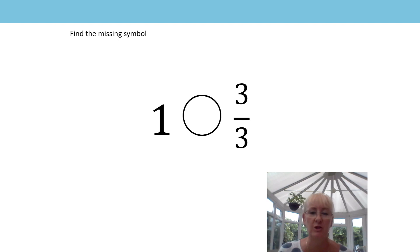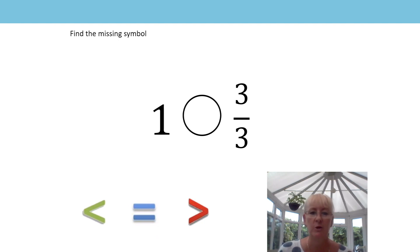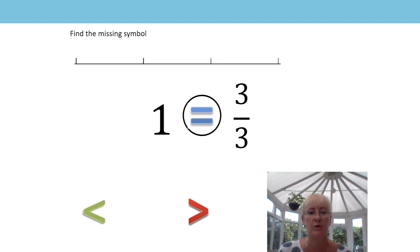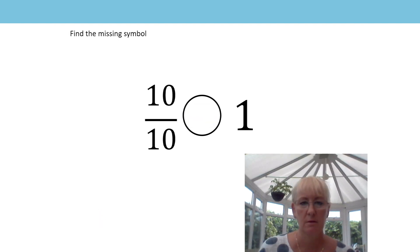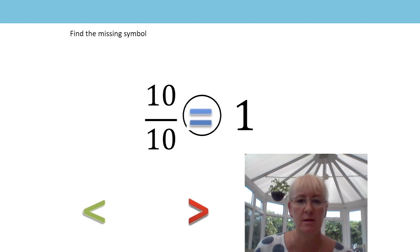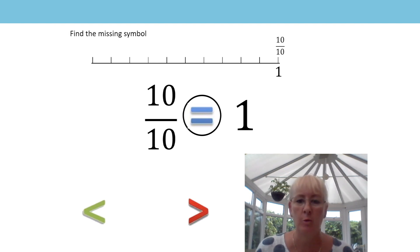We're going to move on with our learning now. I've got some other fractions to compare, but this time they might not be equal. Can you think what sign we could put in the circle to compare these fractions? That's right — one is equivalent to three thirds. One and three thirds share the same place on the number line. What about this pair of numbers? Ten tenths is equivalent to one — here they are on the number line. Remember, if the numerator and the denominator are the same, they share the same position on the number line as one.